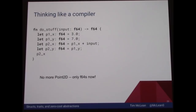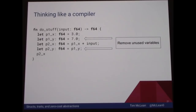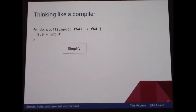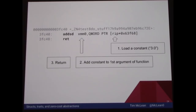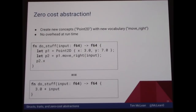We can keep going: remove the unused Y values, since the X is what we're returning — throw them away. Then we simplify further, and we end up with just three plus the input. If we look at the actual generated machine code, sure enough, it's loading a constant — which is three — then adding it to the first function argument, which was our input, and then returning. So the compiler is able to see through all that complexity around Point2D.